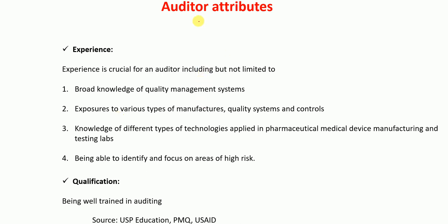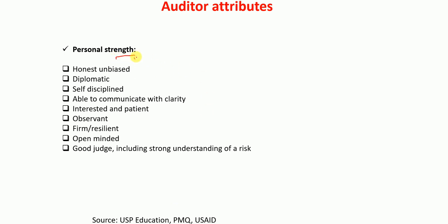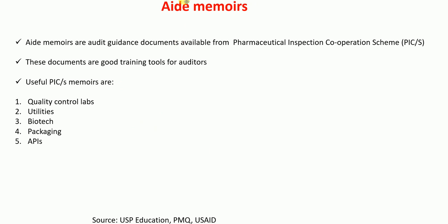What are the attributes that auditors should have? Experienced auditors should have broad knowledge of quality management systems, exposure to various types of manufacturers' quality systems and controls, knowledge of different technologies applied in pharmaceutical and medical device manufacturing and testing laboratories, and the ability to identify and focus on areas of high risk. Auditors should be well trained and have personal strengths: honest, unbiased, diplomatic, self-disciplined, able to communicate clearly, patient, observant, firm, open-minded, and having good judgment skills including a strong understanding of risk.